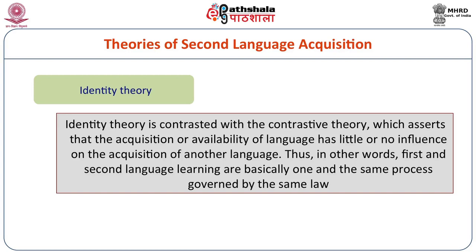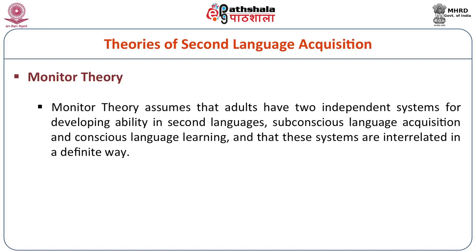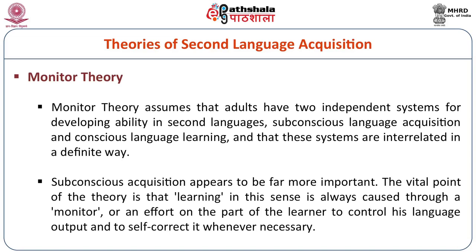Identity theory is contrasted with the contrastive theory — it asserts that the acquisition or availability of one language has little or no influence on the acquisition of another. Identity theory says that first and second language learning are basically one and the same process governed by the same laws. Monitor theory assumes that adults have two independent systems for developing ability in second languages: subconscious language acquisition and conscious language acquisition, which are interrelated. The vital point is that learning is always caused through a monitor — an effort by the learner to control their language output and self-correct it whenever necessary.